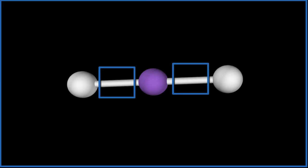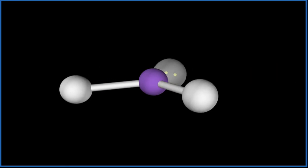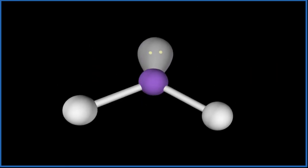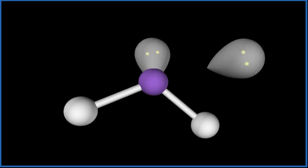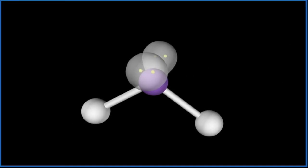We add one lone pair, pushes everything down. Let's add one more. That's our second lone pair. And now we have this bent molecular geometry.